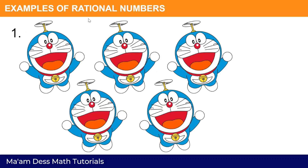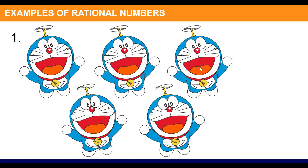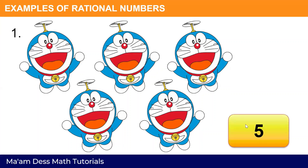Here are the examples of rational numbers. If you are going to count this Doraemon's picture, so we have five. What is the number five? Five can be a counting number. Five is also a whole number, and this is also an integer. Therefore, the number five is an example of a rational number.